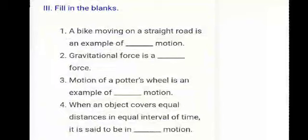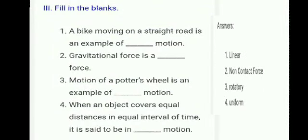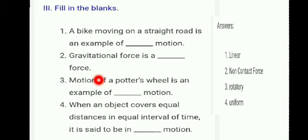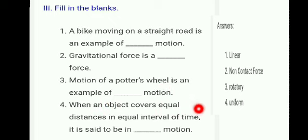Fill in the blanks. A bike moving on a straight road is an example of linear motion. Gravitational force is a non-contact force. Most fans reveal an example of rotatory motion. When an object covers equal distance in equal intervals of time, it is said to be in uniform motion.